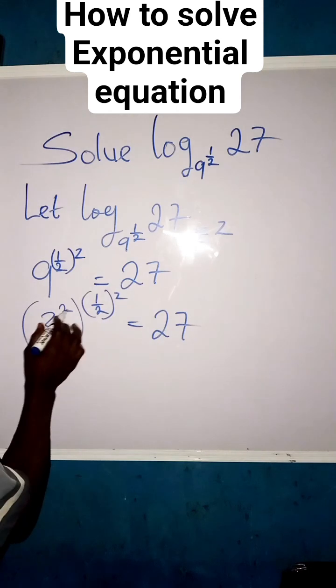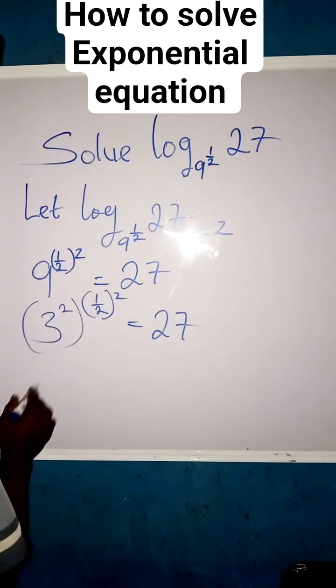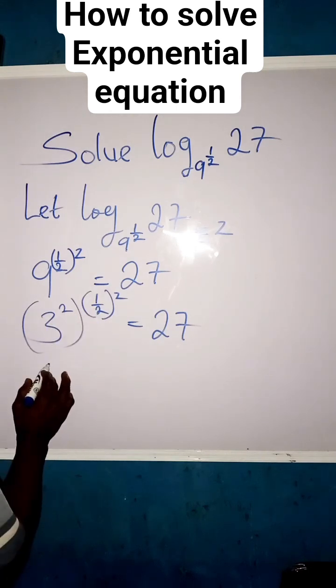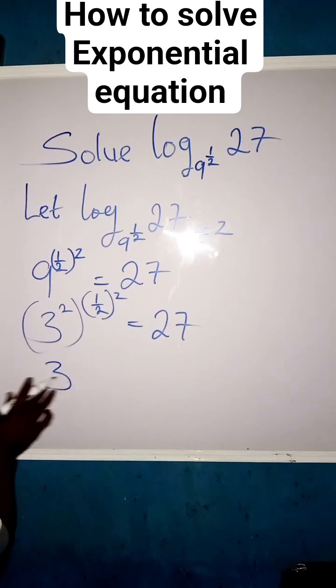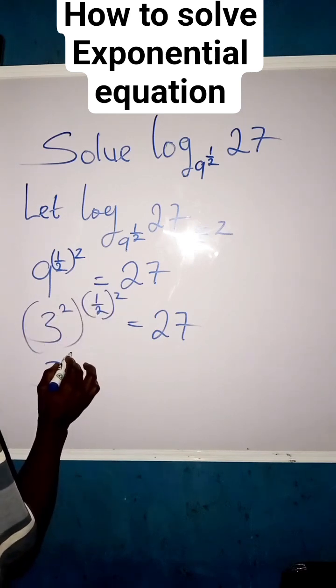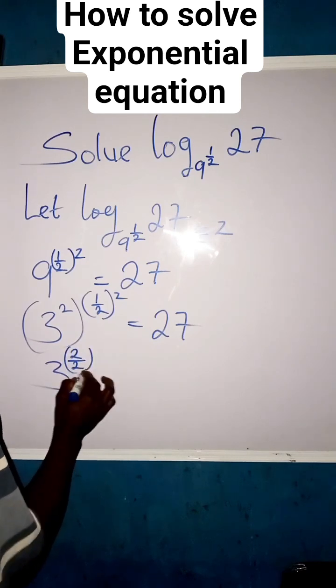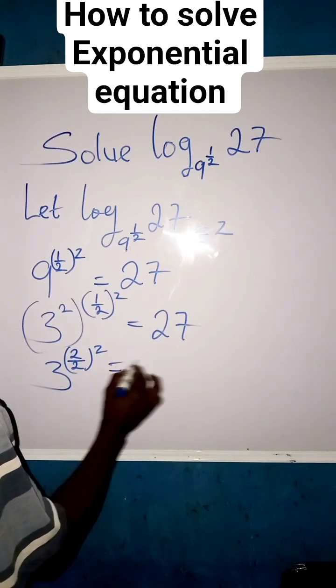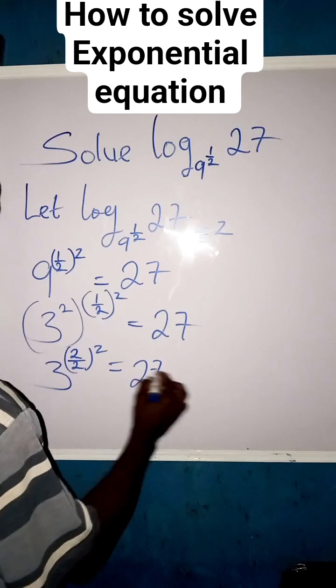We can see that we can multiply this power together, so let us proceed. We have base 3 here, 2 times 1 will give us 2/2, then times z equals to 27.